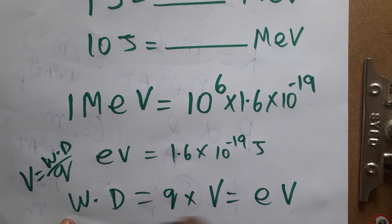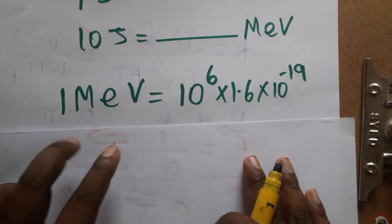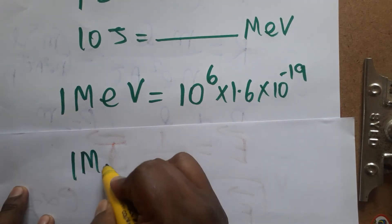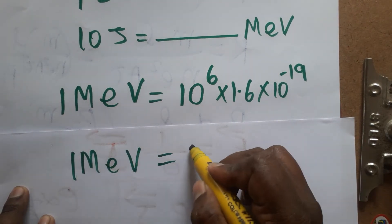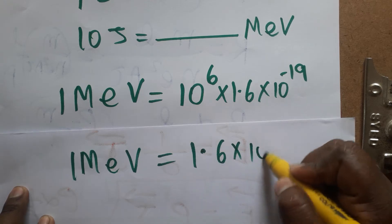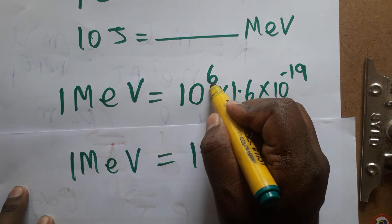So charge here it's electron. So work done is equal to charge into voltage. That means eV is a voltage, it's a unit of energy. Okay, so now we have mega electron volt is this much value, 1 MeV, million electron volt also it's fine, it's 1.6 into 10 power minus 13.